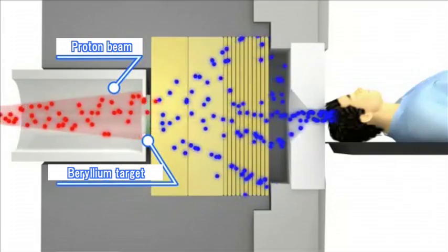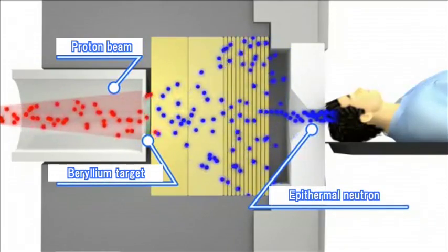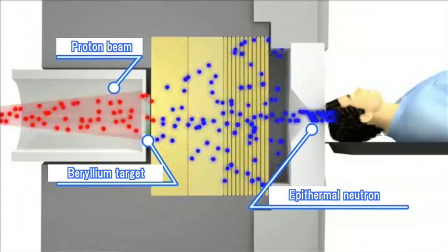Neutrons are decelerated until the energy is lowered to an appropriate level for treatment and are irradiated on the cancer affected area.